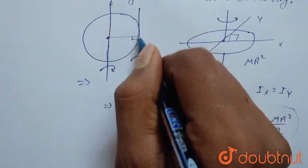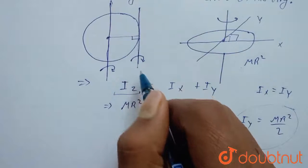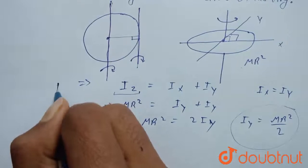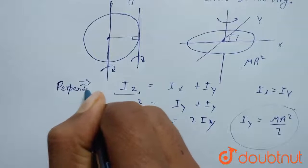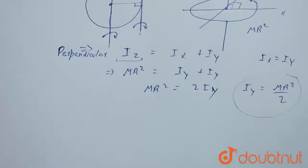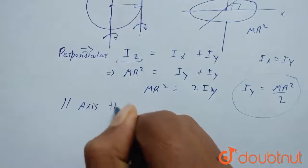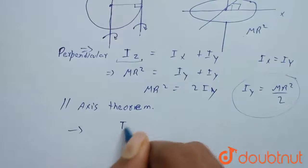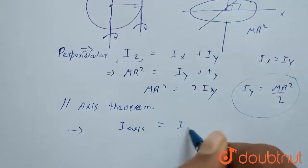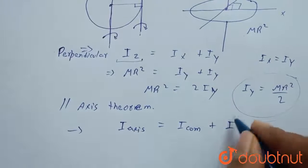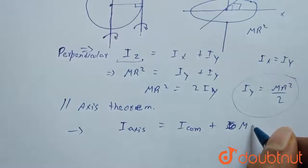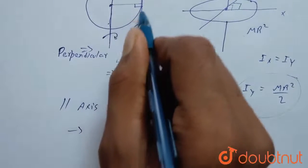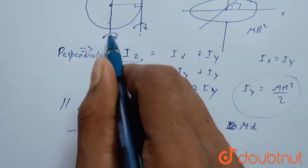Now we have to find the moment of inertia about the tangent axis. So we will apply the Parallel Axis Theorem. What does this theorem say? It says that I about any axis equals I about the center of mass plus MD², where D is the distance between that axis and the axis passing through the center of mass.